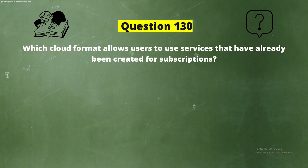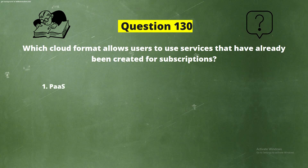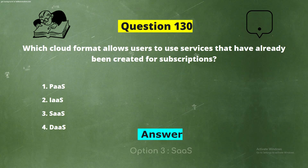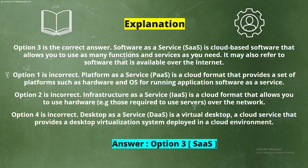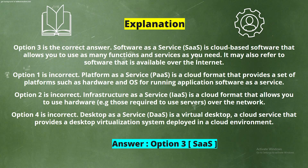Question 130. Which cloud format allows users to use services that have already been created for subscription? The options are: Option 1, PaaS; Option 2, IaaS; Option 3, SaaS; Option 4, DaaS. The correct answer is Option 3, SaaS. Software as a service is a cloud-based software that allows you to use as many functions and services as you need, and may also refer to software that is available over the internet.